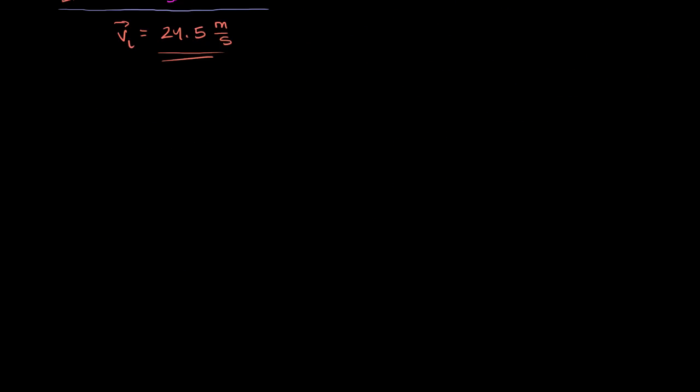So let's say that the ball is in the air for delta t. Delta t is equal to time in the air. Then we know that the time up is going to be half that, which is the same thing as the time down. The time up is going to be equal to delta t, the time in the air divided by 2.